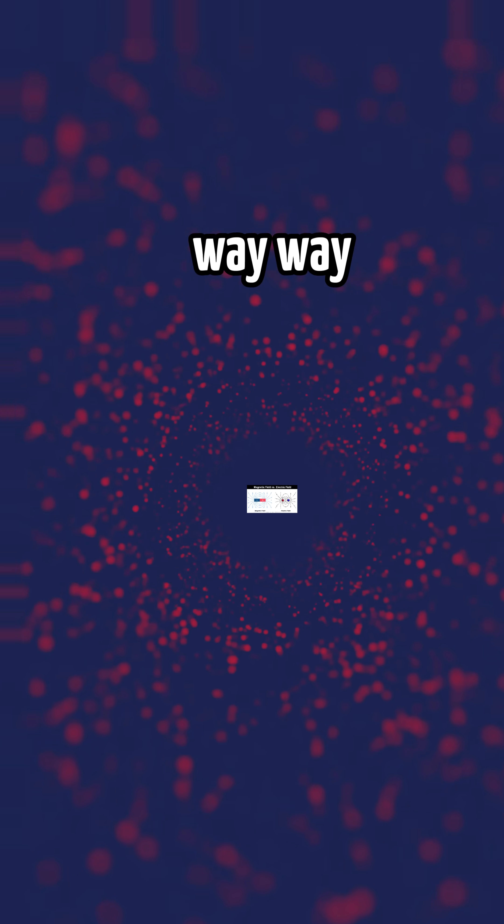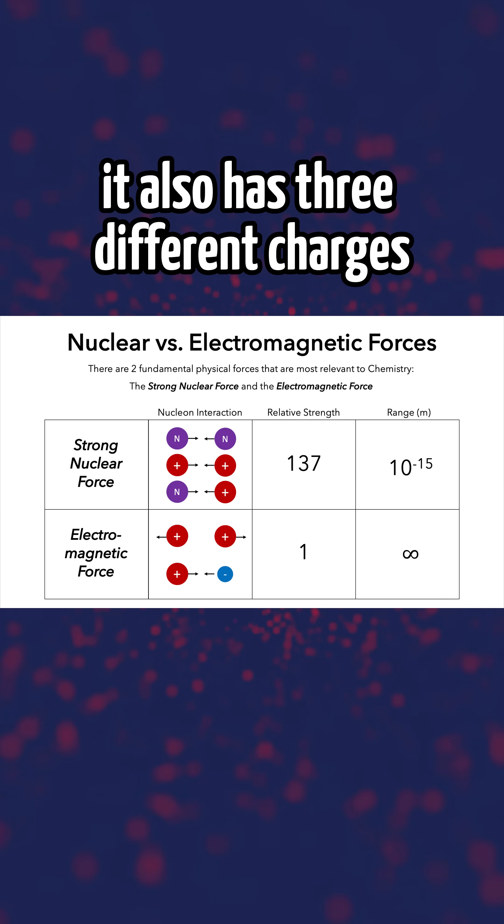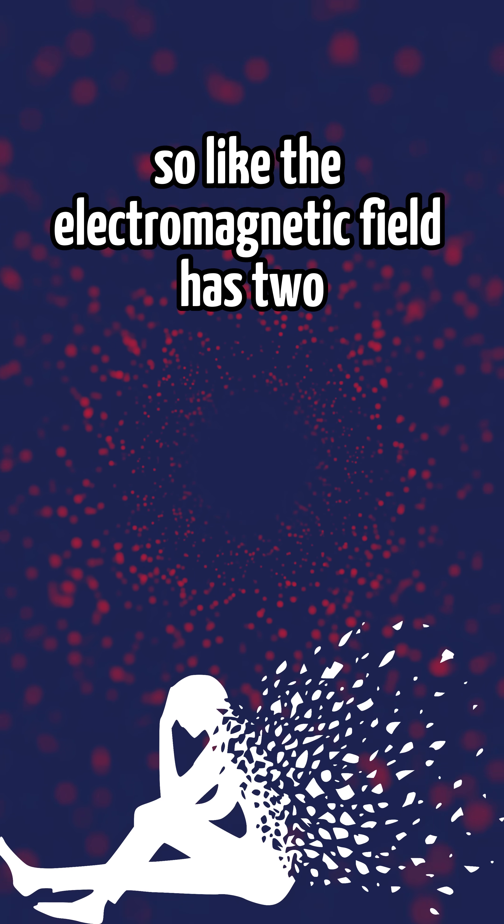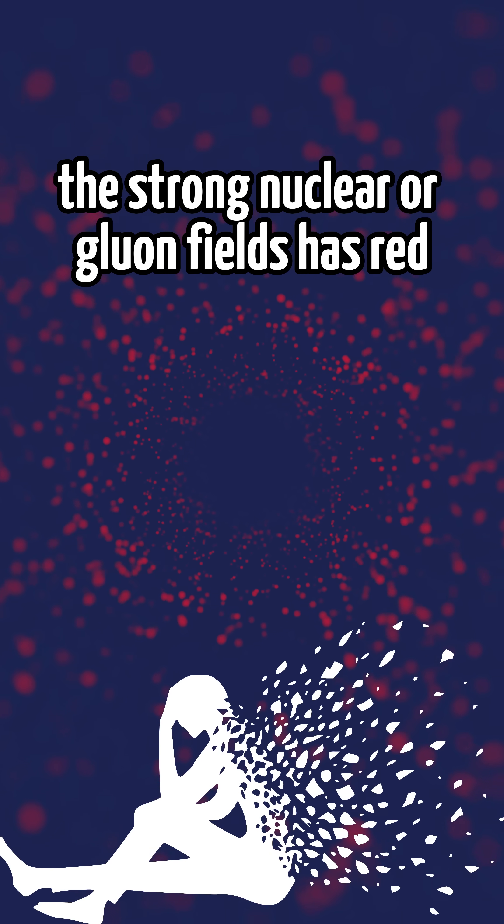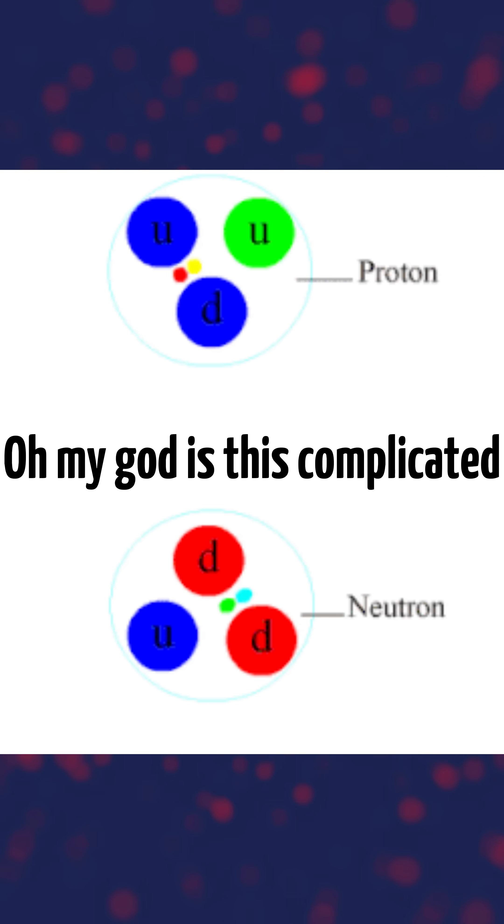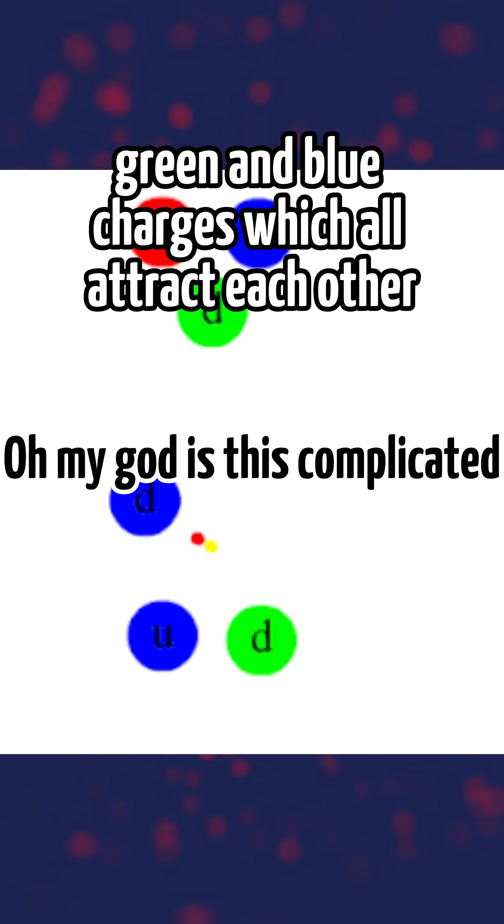And is way way way stronger. It also has three different charges. So like the electromagnetic field has two, positive and negative, the strong nuclear or gluon field has red, green, and blue charges, which all attract each other.